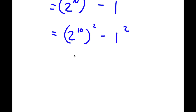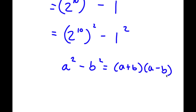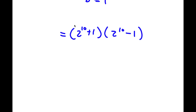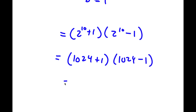So now I have 2 to the power of 10 to the power of 2, minus 1 to the power of 2. Now if I have something in the form a squared minus b squared, this is equal to a plus b times a minus b. In this case, a is equal to 2 to the power of 10 and b is equal to 1. So now I have 2 to the power of 10 plus 1 times 2 to the power of 10 minus 1. Now, 2 to the power of 10 equals 1024. So I have 1024 plus 1 times 1024 minus 1, which is 1025 times 1023.